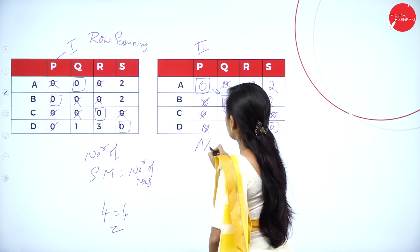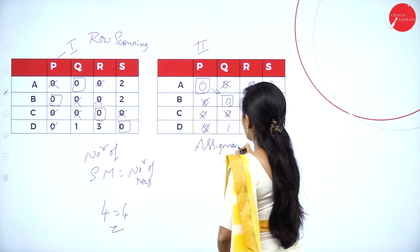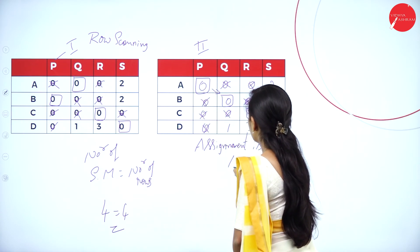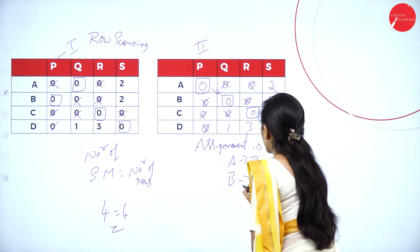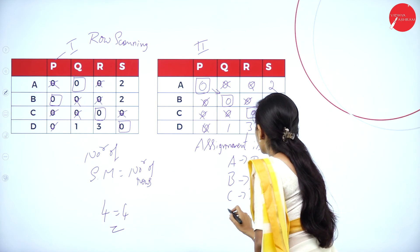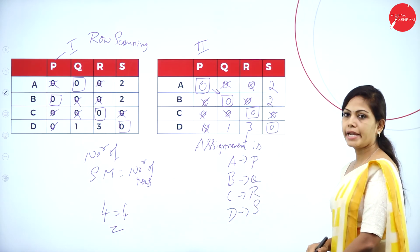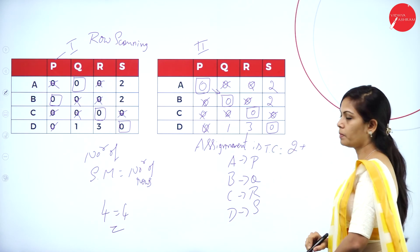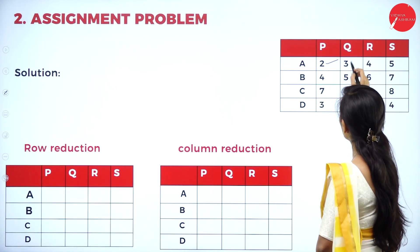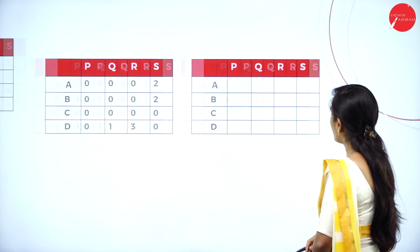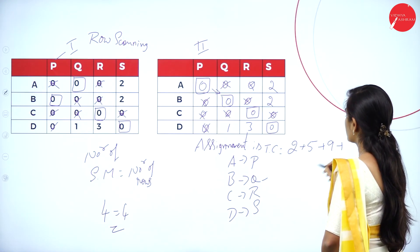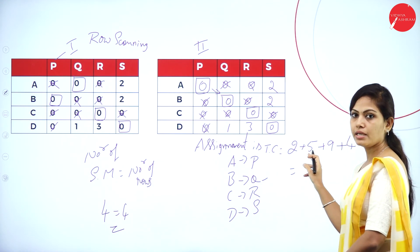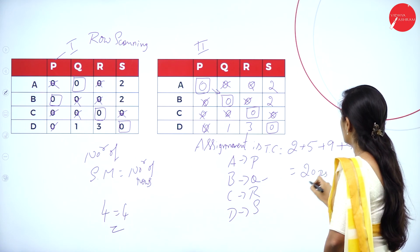The final assignment for the first alternative is: A to P, B to Q, C to R, D to S. The original values are: A to P is 2; B to Q is 5; C to R is 9; D to S is 4. Total cost: 2 plus 5 plus 9 plus 4 equals 20 rupees.